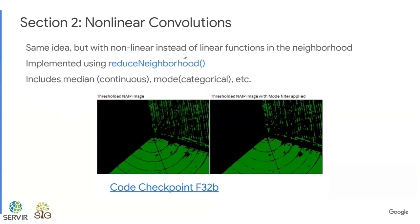The next section talks about non-linear convolutions. This is the same idea — same neighborhoods, same focal pixel concept — but instead of linear functions in the neighborhood, we're using nonlinear functions. These are generally implemented using the reduceNeighborhood function, and they include things like median for continuous variables and mode for categorical variables.